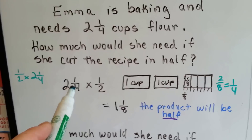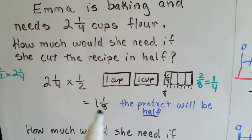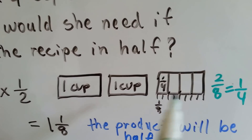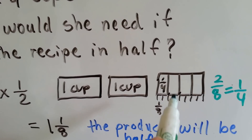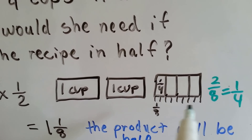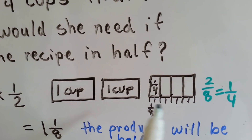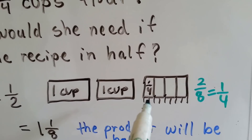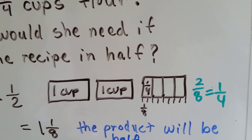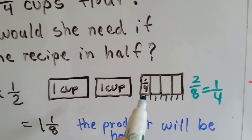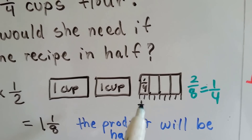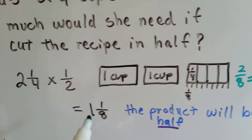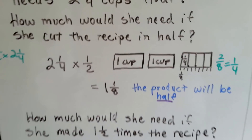So if we want to cut 2 and 1 fourth in half, here's 1 cup, 2 cups, and 1 fourth of a cup. When we cut the fourths in half, we put a little line down the middle of each fourth, and we realize that we have 8 pieces — we have eighths. 2 little eighths is equal to 1 fourth, so half of this fourth is going to be an eighth. We'll take 1 of these eighths and 1 of the cups, and 1 and 1 eighth is a half.